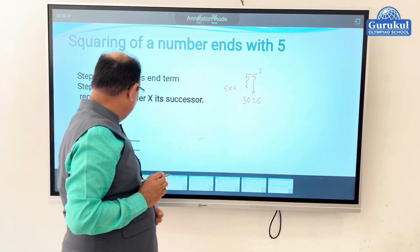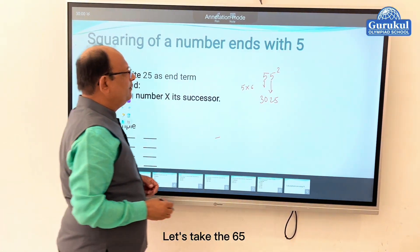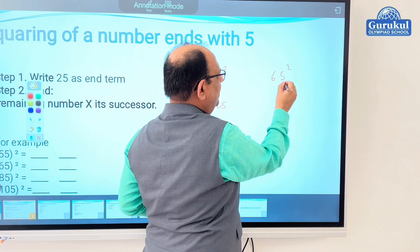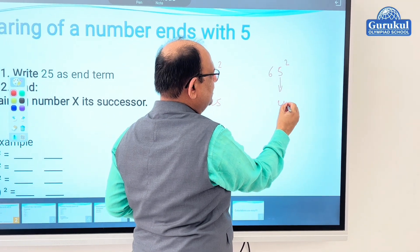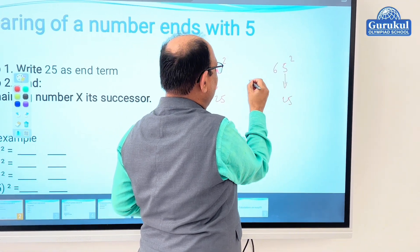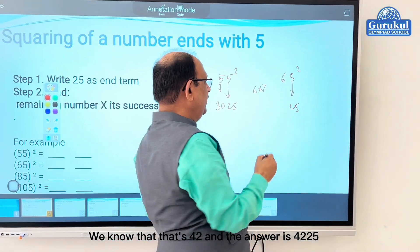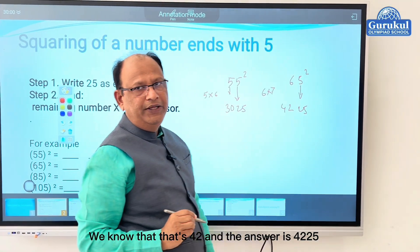Now you can try out with one more. Let's take sixty-five. If I'm going with sixty-five, again the rule says it's all about five becomes twenty-five. And then, six ke baad aata hai seven. And so six into seven, we know that's forty-two. And the answer is 4225.